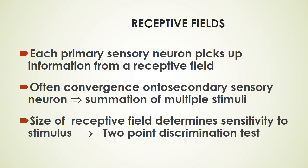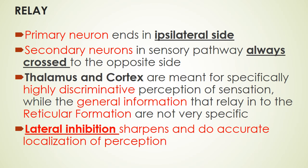The general rule is that the primary sensory neuron picks up information from the receptive field, and there is convergence into secondary sensory neurons. The size of the receptive field determines the sensitivity of the stimulus. Primary neurons end in the ipsilateral (same) side of the spinal cord; secondary neurons always cross to the opposite side, either in the medulla or in the spinal cord itself. The thalamus and cortex are responsible for highly discriminative perception of sensation.